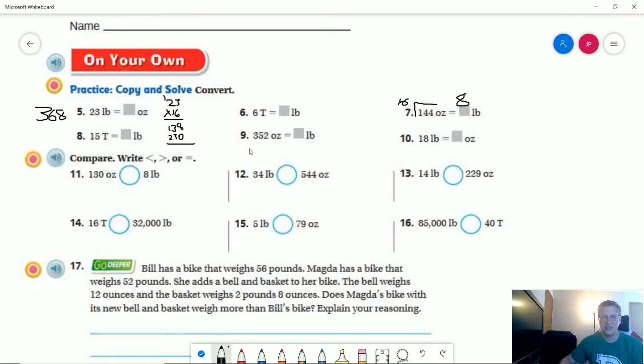Number nine, 352 ounces. Again, we are going to divide by 16. So I can do that twice to get to 32, and I am going to have 32 left. So this one would be 22 pounds.